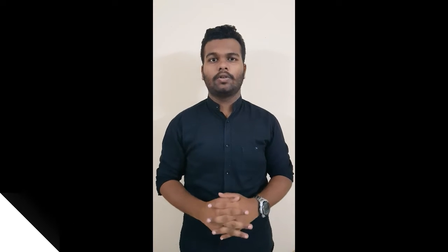Our next clause is Having Clause. Having Clause is used to specify a search condition for a group. Having Clause is used in Group By Clause. Now you can see the syntax of Having Clause.